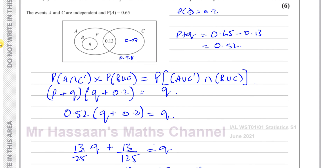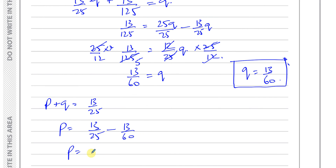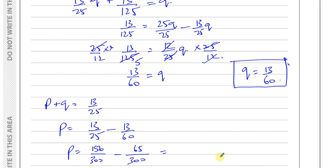We know P + Q = 0.52 = 13/25. So P = 13/25 − 13/60. Finding a common denominator of 300: 13/25 = 156/300 and 13/60 = 65/300. So P = 156/300 − 65/300 = 91/300.